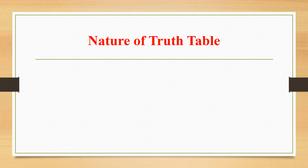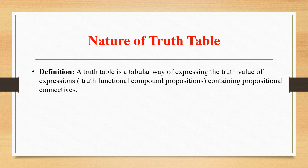Now we come to the nature of the truth table. A truth table is a tabular way of expressing the truth value of expressions — that is, the truth functional compound propositions containing propositional connectives. In other words, whatever truth values a truth functional compound proposition has, those truth values are expressed in table form. That is called a truth table.